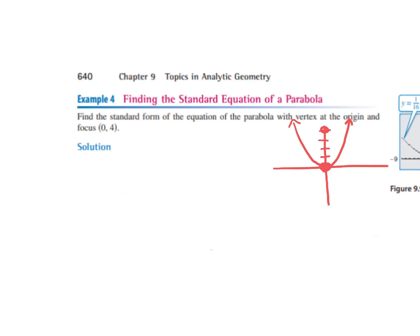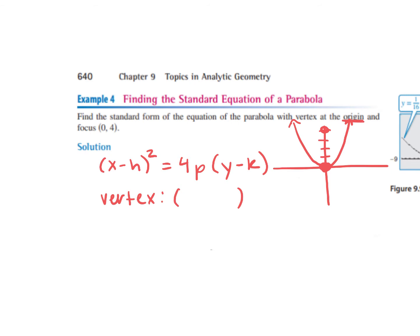We're using the equation from the first one: (x − h)² = 4p(y − k). Notice how just x is squared, not y — that's what makes our equation a vertical parabola. Here h and k are the coordinates of our vertex, which is at the origin, so h = 0 and k = 0. Our p comes from the focus formula: the focus is (h, k + p).